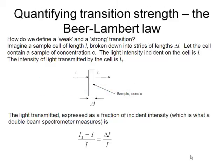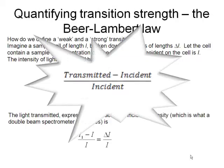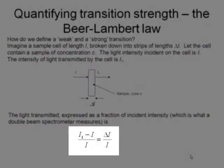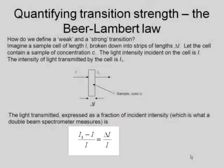The amount of light transmitted is expressed as a fraction of the incident intensity. So we do I₁ minus I, transmitted intensity minus the incident intensity, and then divide it by the incident intensity. We call that delta I over I. That's the fraction of light transmitted by that thin strip of length delta L.